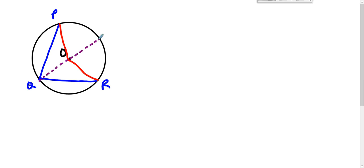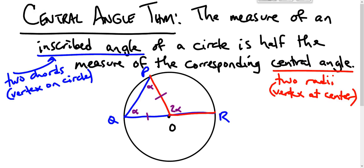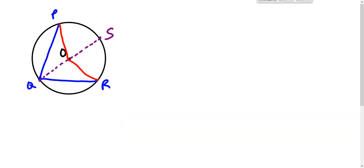We draw line QO; it intersects up here at maybe S, and we use this case twice. Whatever this alpha is, this is twice as big. Whatever that beta is, this is twice as big. So the central angle has a measure that is twice as big as the measure of the inscribed angle. And that's case two.